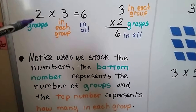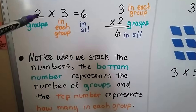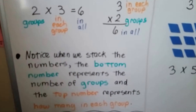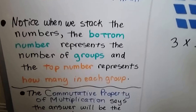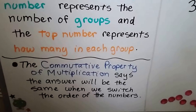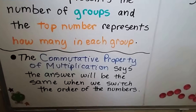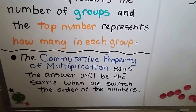Notice when we stack the numbers, the bottom number represents the number of groups and the top number represents how many are in each group — see how that switched around? First we had this as the groups, and now it becomes the bottom number. Remember what we talked about before: the commutative property of multiplication says the answer will be the same when we switch the order of the numbers.